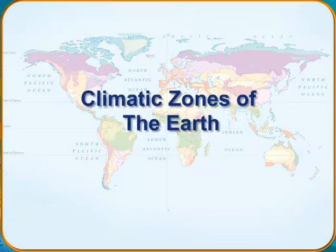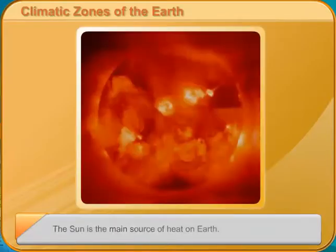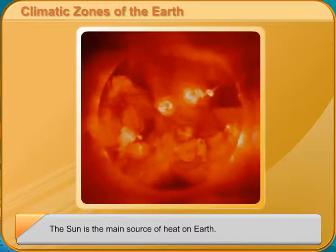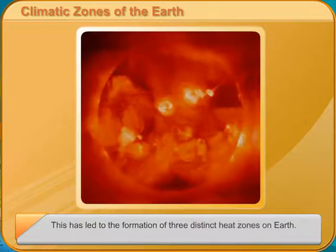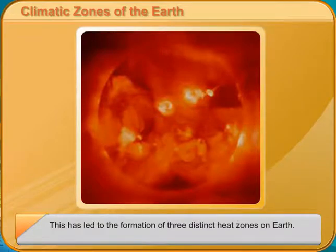Climatic Zones of the Earth. The Sun is the main source of heat on Earth. The amount of heat received from the Sun is maximum at the equator, decreasing as we move away from the equator and towards the poles. This has led to the formation of three distinct heat zones on Earth.